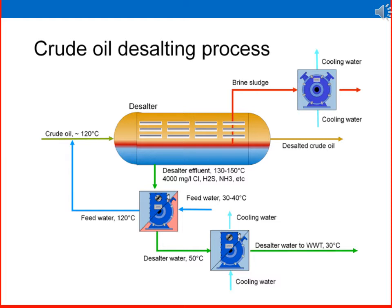In another diagram showing the desalting process: crude oil — the green line — enters at around 100 degrees C from the heater, while fresh water — the blue line — at ambient temperature of 30–40°C is heated up to 120°C, then both are mixed together before entering the desalter. The desalter separates the crude oil, which exits from one end, while brine and sludge exits from another, and the desalter fluid goes to another side. Please review and understand this process flow carefully.